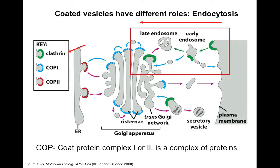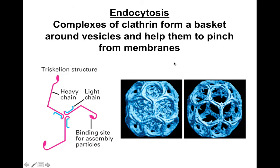Today we'll be talking mainly about endocytosis through clathrin-coated vesicles. Clathrin-coated vesicles carry cargo into the cell. Endocytosis occurs through complexes of clathrin which form a basket, and they form vesicles and help the vesicles pinch off from the membrane.